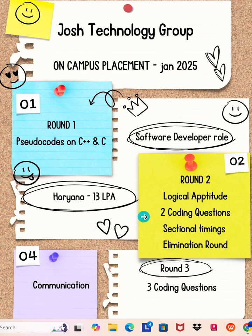Round 2 consists of logical aptitude and 2 coding questions with sectional timings, and it is also an elimination round. The company is located in Haryana and the package is 13 LPA.